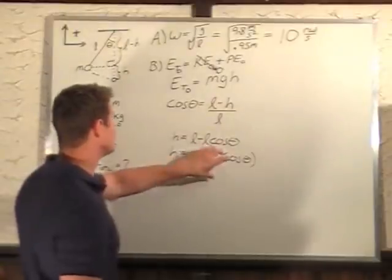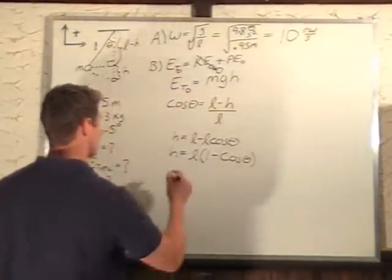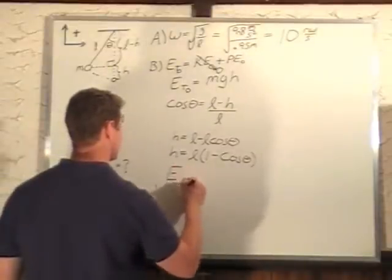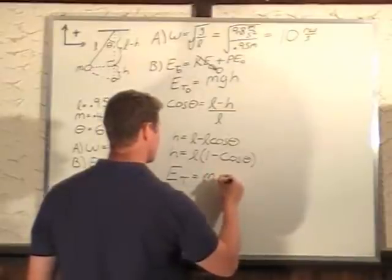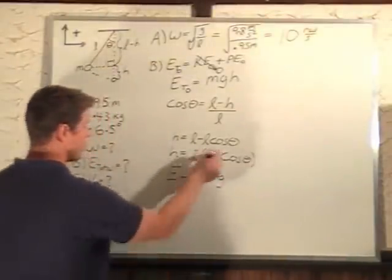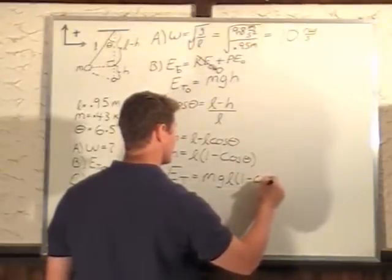Our total energy is equal to m times g times h, which is l times 1 minus cos theta.